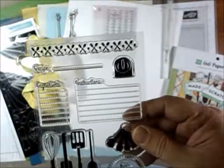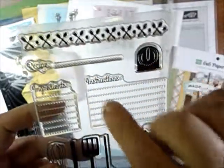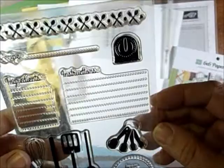And the second, the add-on stamp set or the second stamp set is called Stampin' Utensils, and you can make a really cute recipe card with this.